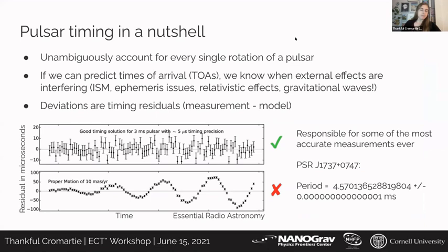We know of about 400 millisecond pulsars at this point. The reason millisecond pulsars are phenomenal scientific tools is because they have very stable rotational rates. Over long time scales, we can do pulsar timing, which is unambiguously accounting for each and every single rotation of a neutron star. If we can predict the time of arrival of each pulse and the pulses aren't arriving on time, we know some external effect is intervening — such as the interstellar medium or relativistic effects — inducing so-called timing residuals.